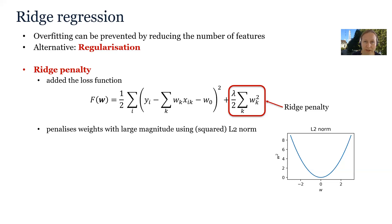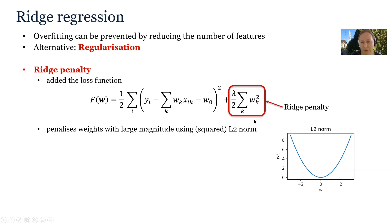We regularize the model by adding a penalty to the loss function, and this penalty can for example discourage weights with large magnitudes. If the penalty is equal to the squared L2 norm it's called the ridge penalty, and it is equal simply to the sum of squares of the individual weights.